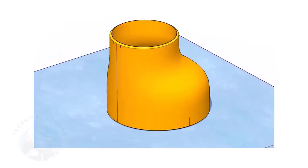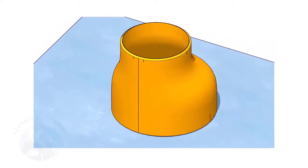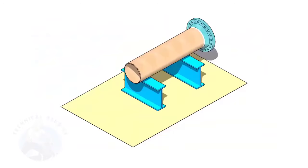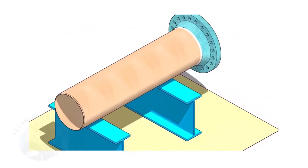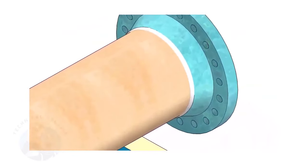Remember, the sequence of the fit up is more important. Assume that the flange is welded to the pipe. Put the spool on suitable supports.